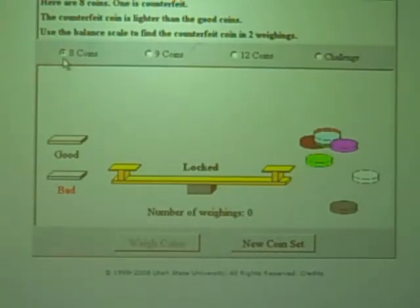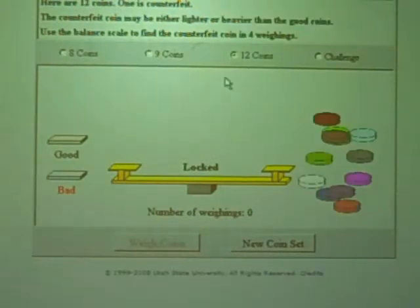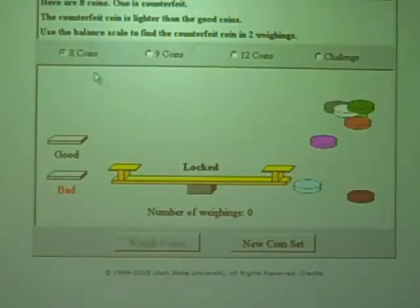Now, we can use 8 coins, 9, or 12 coins, or we can do a challenge one. Let's just start with 8 coins. Our goal is to detect the lighter coin in the set of 8 with just 2 weighings.